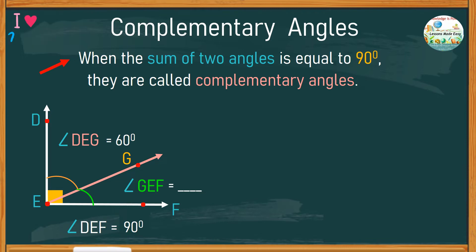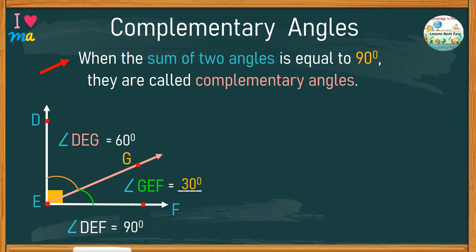Remember, these two angles together would be 90 degrees. Therefore, if one of the angles is 60, the other must be 30 degrees to get a total of 90.